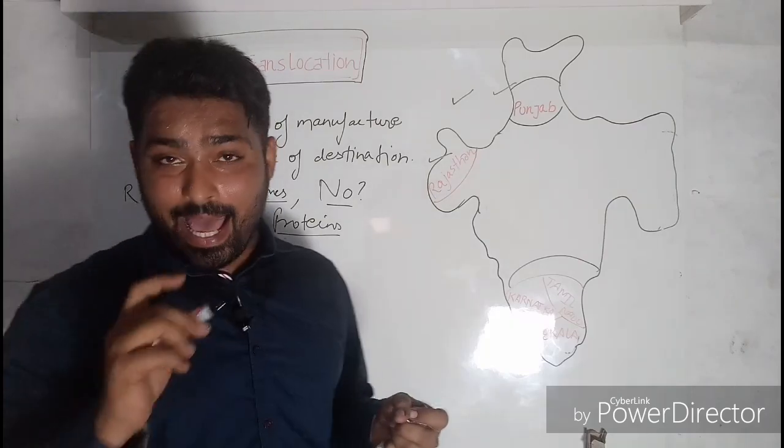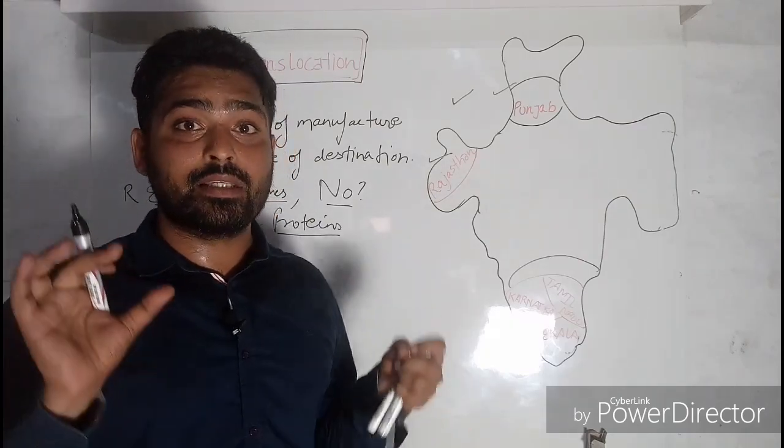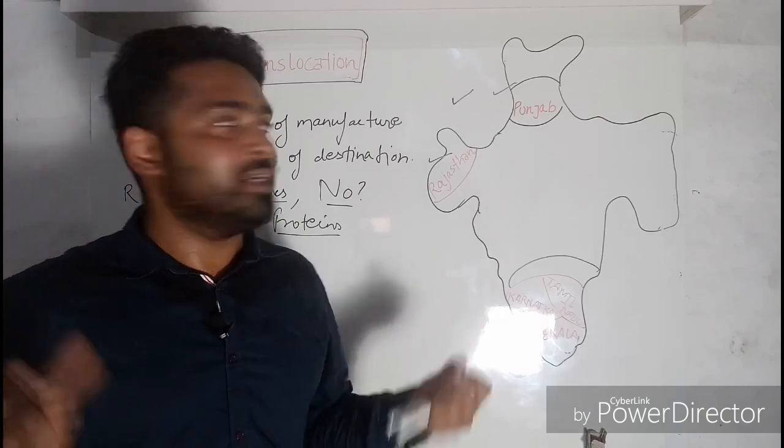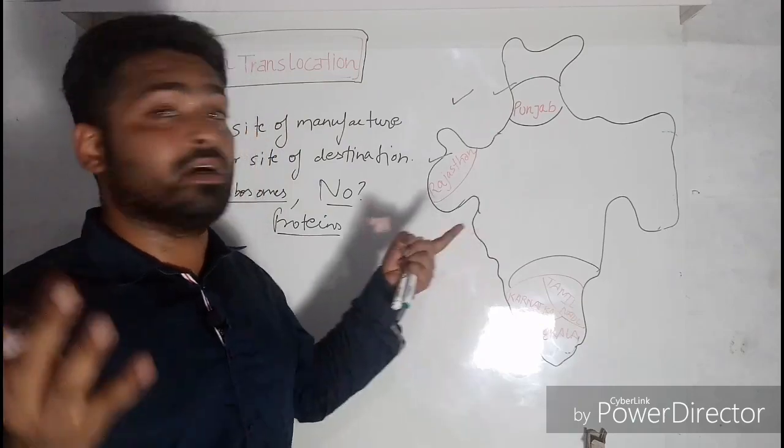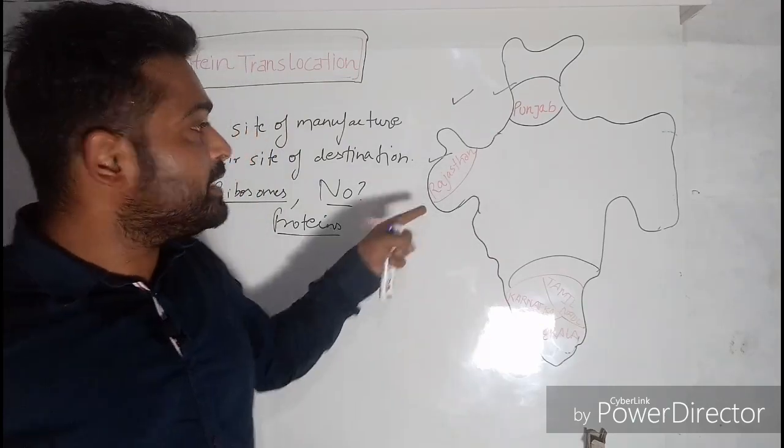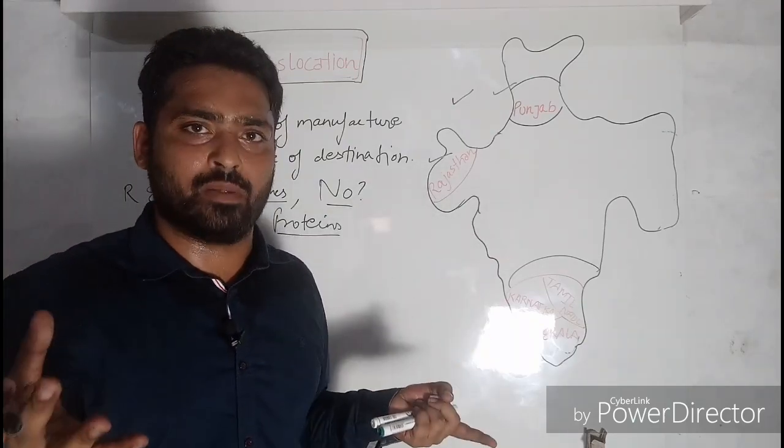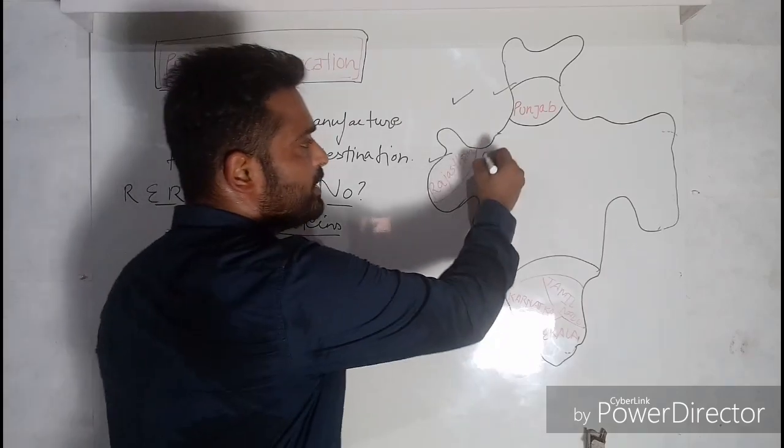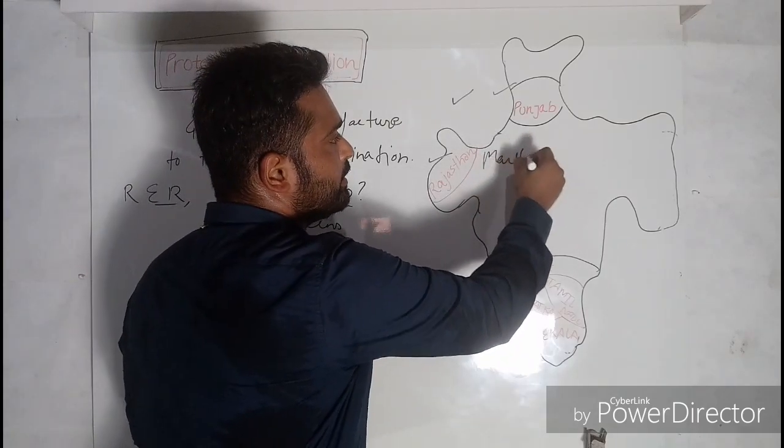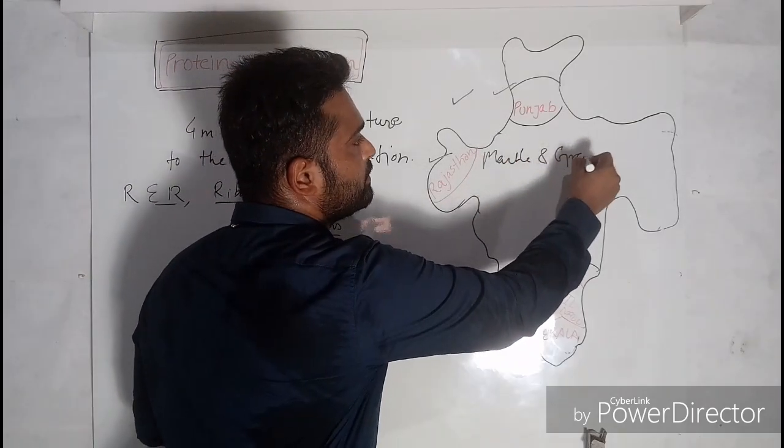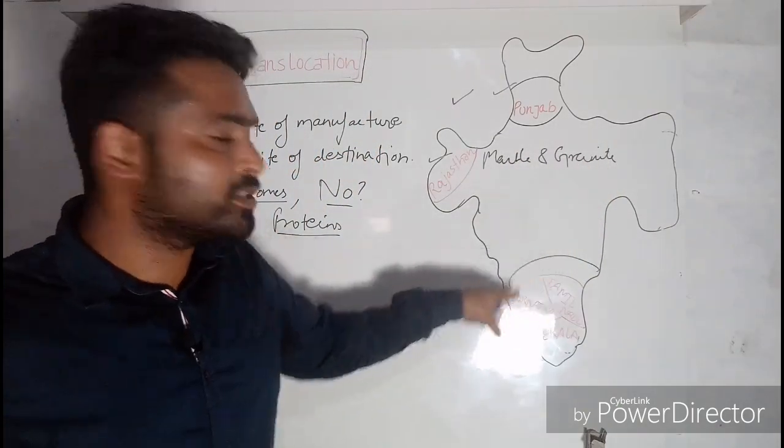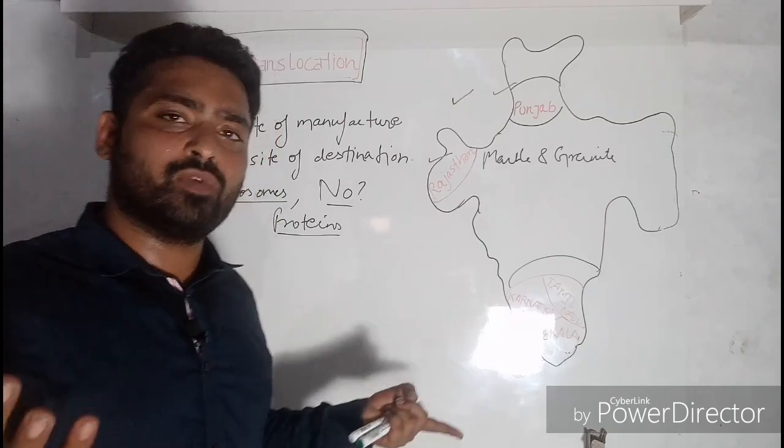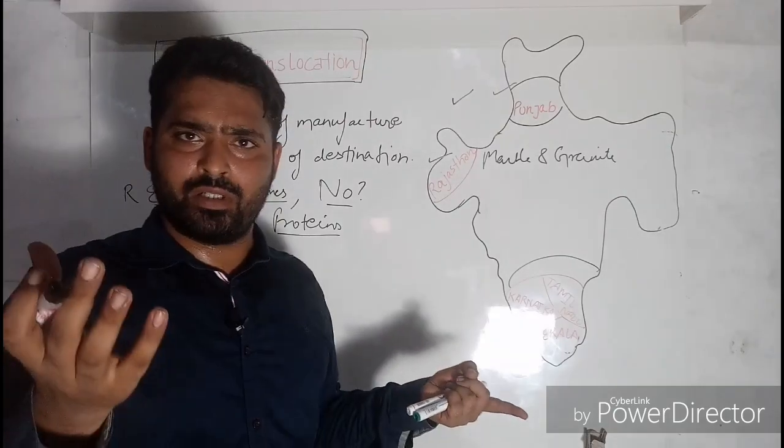The important point here is that every state is famous for something. Like Punjab is famous for the production of food, that is rice and wheat. Similarly, Rajasthan is popular for something and that is marble and granite. Similarly, in the south, the south states are famous for spices.